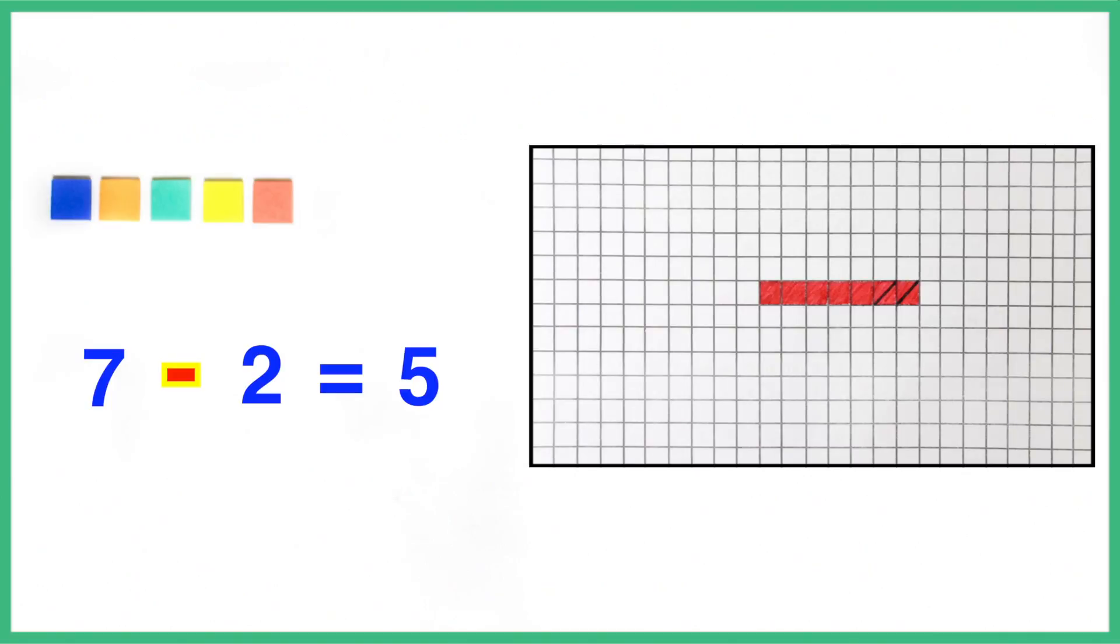The minus sign is used to show that 2 is taken away from 7. The equal to sign shows the amount that is remaining or the difference. This process is called subtraction.